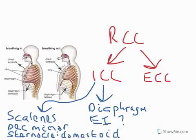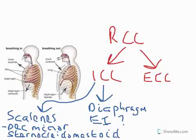The inspiratory control centre recruits three additional accessory muscles: the scalenes, the pectoralis minor, and the sternocleidomastoid. These are recruited when we breathe in more deeply and use up more of our inspiratory reserve volume.